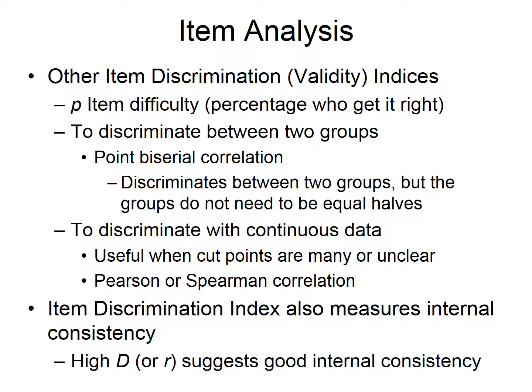P is simply item difficulty — that's just the percentage who gets it right. That's a good marker to determine how common it is for someone to get an item right. Depending on the purpose of the test, if we want to test basic proficiencies, we might want very easy items. If we want to discriminate between top, medium, and bottom performers, we probably want a mix of easy, moderate, and harder items.